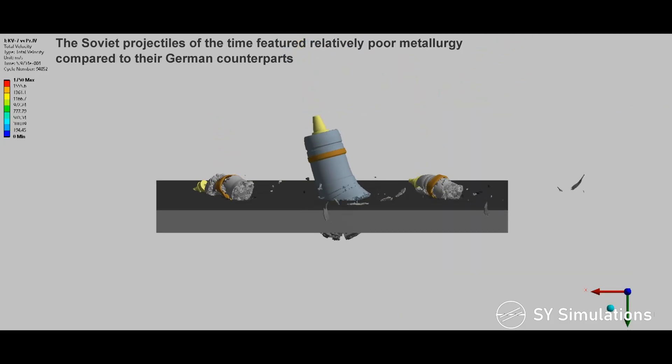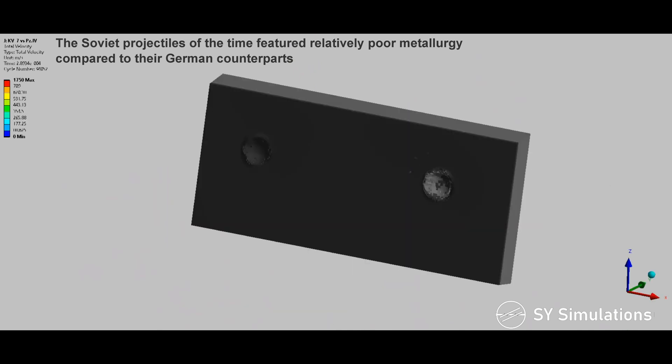The Soviet projectiles of the time featured relatively poor metallurgy compared to their German counterparts.